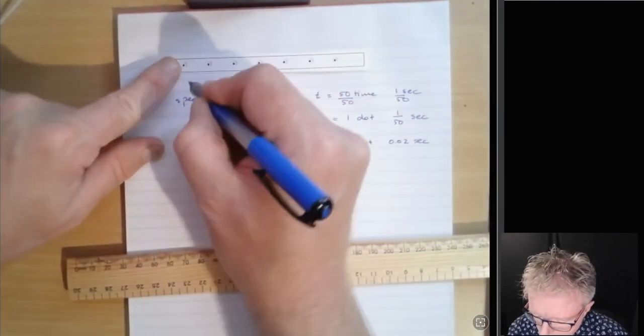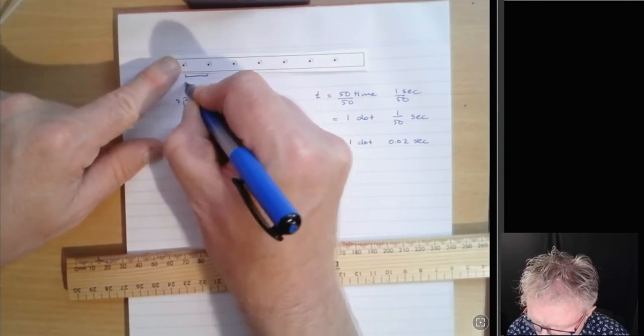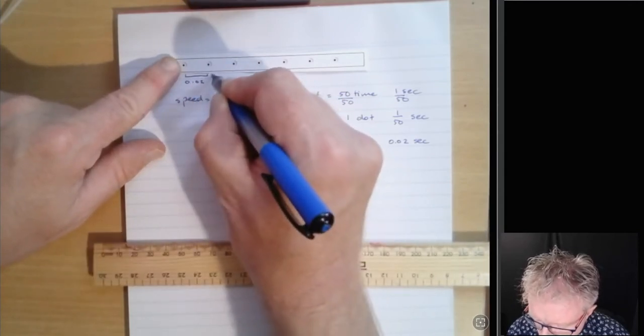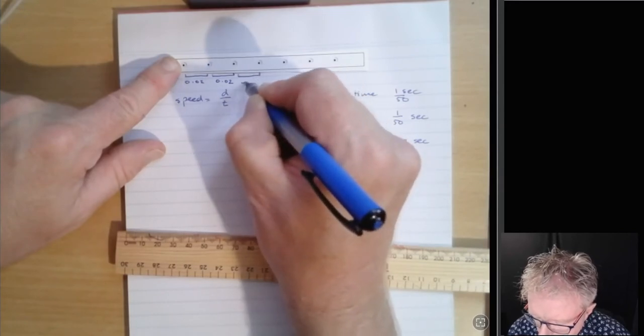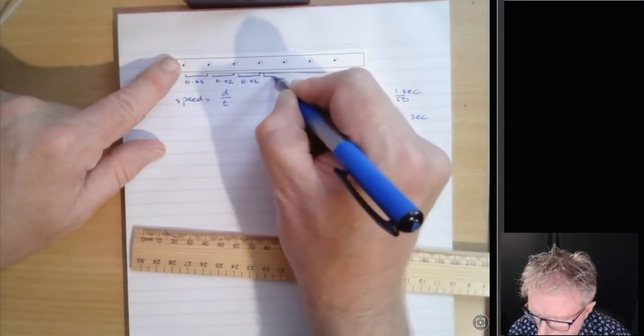So between each dot, and we'll just do that here, is between that time, right? 0.02. Then there's 0.02. So the distance between each dot is that time frame.